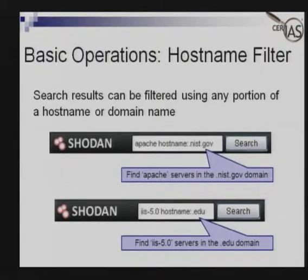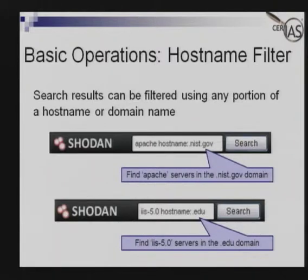You can start to see why banner information is important to us. Microsoft Windows 2000, which is IIS 5.0, is now over a decade old. There are a lot of vulnerabilities that exist in it, and Microsoft no longer supports it. So if there are servers out there still running Windows 2000, chances are there are vulnerabilities associated with those servers. Without even going to the site itself, we already know it could be potentially vulnerable.